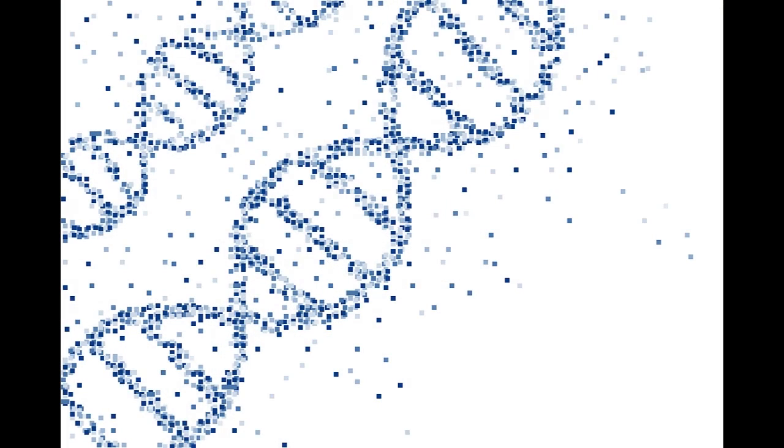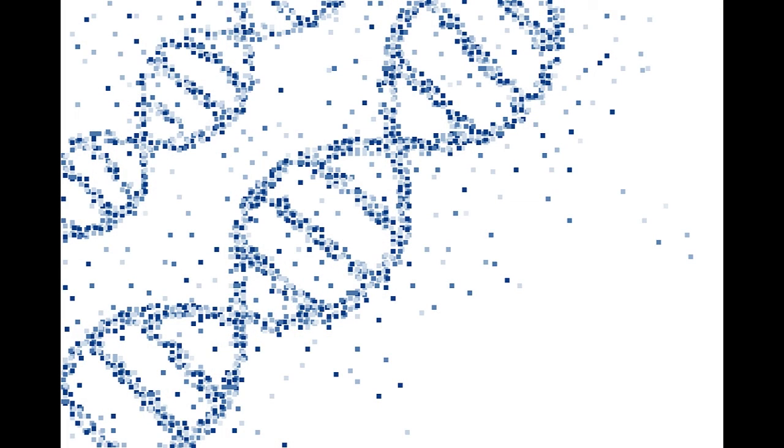In genetic testing, electrophoresis is used for blotting procedures. We have Southern blot, Northern blot, and Western blot. Electrophoresis here is used to separate DNA, RNA, and protein particles.